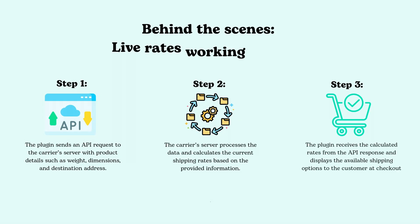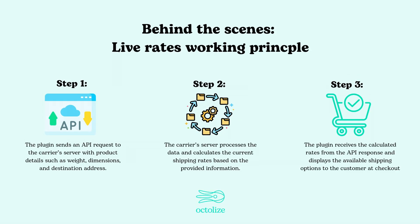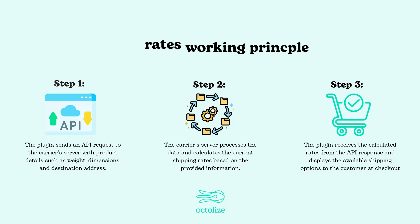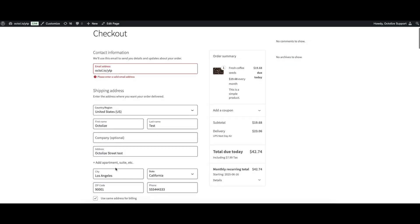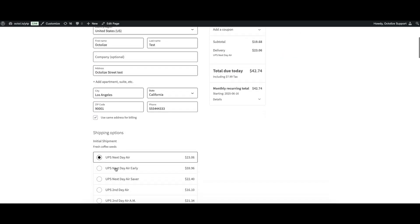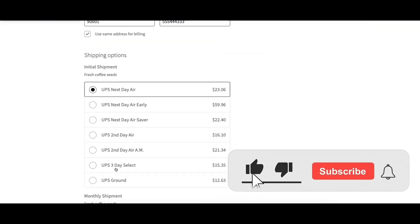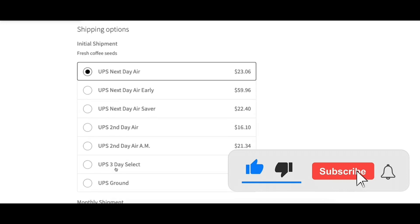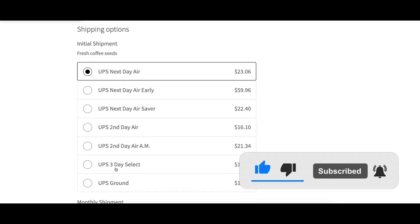This connection allows the plugin to fetch up-to-date shipping prices dynamically, considering factors such as the weight and size of the package, the destination address, and even the shipping service selected. This means your customers get real-time, precise shipping costs every time they check out — no guessing, no surprises.